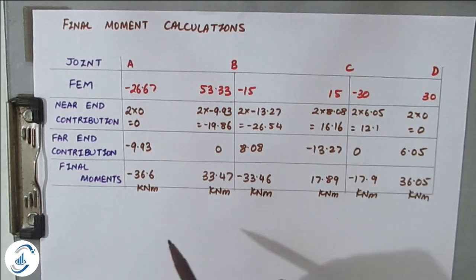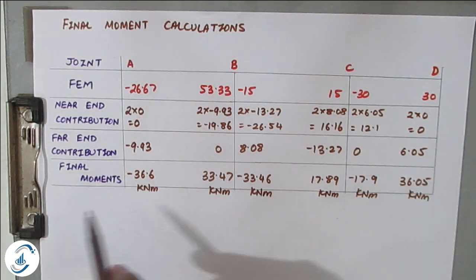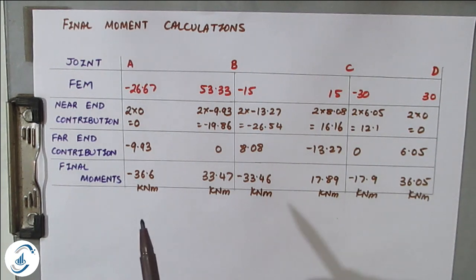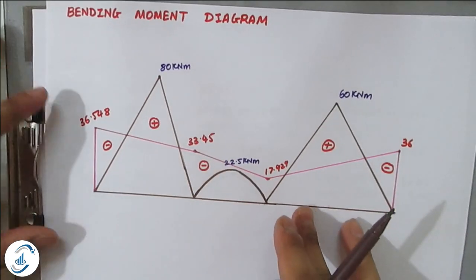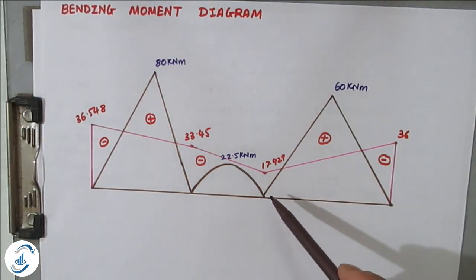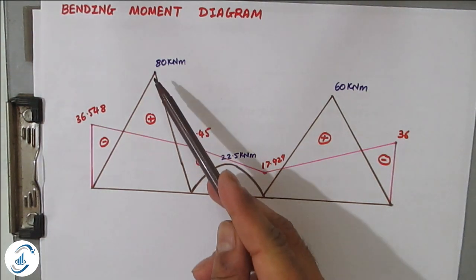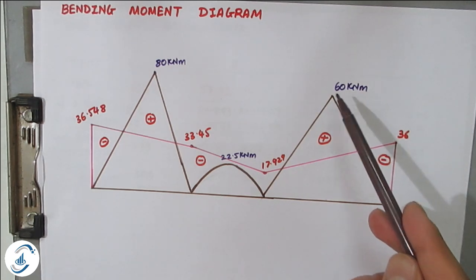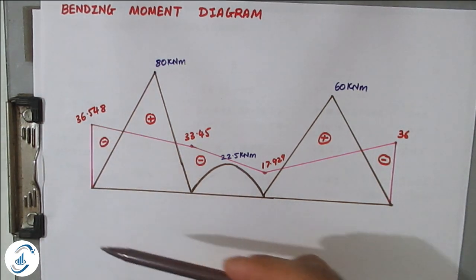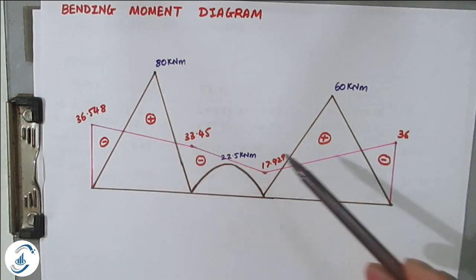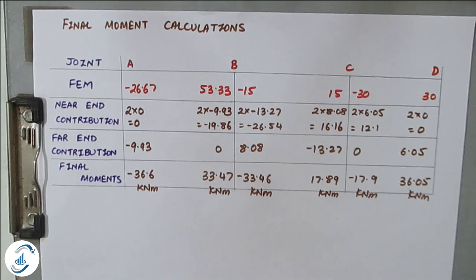These answers match those from the moment distribution method, confirming correctness. The last step is to draw the bending moment diagram. The net BMD uses loading condition values — W·a·b/L for off-center point load, P·L/4 for center point load, W·L²/8 for UDL — overlaid with the final support moments. I hope you understood this problem. Please like, share, and subscribe to All About Structural Analysis and Design, and press the bell icon for latest notifications.